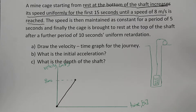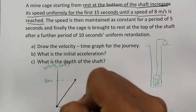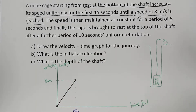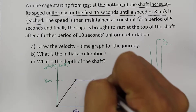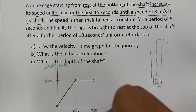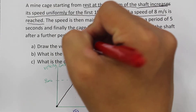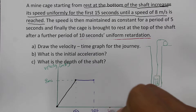Next, the speed is maintained as constant for a period of 5 seconds. This first phase of motion has taken 15 seconds, so after the constant velocity section we are at 20 seconds total. Then for the last part of the motion we have 10 seconds of uniform retardation, bringing us to 30 seconds total.